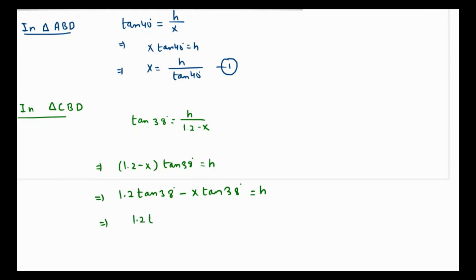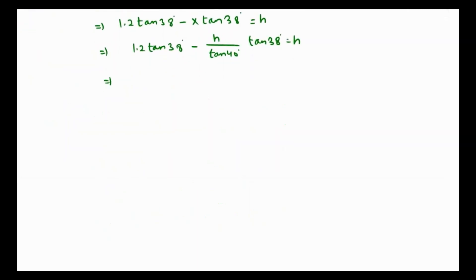So that's going to be 1.2 tan of 38 degrees. Moving this side over to the right, this is 1.2 tan of 38 degrees equals h plus h tan of 38 over tan of 40. If we flip the equation and take h as a common factor, that's h times 1 plus tan of 38 over tan of 40 equals 1.2 tan of 38.